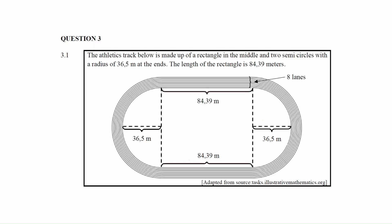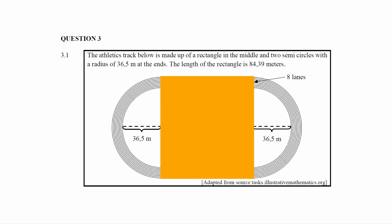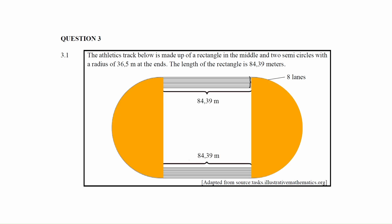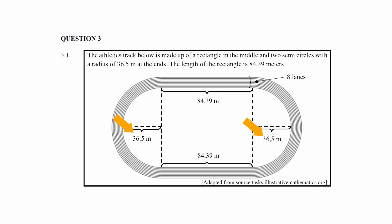You are given a diagram of an athletics track made up of a rectangle in the middle and two semicircles with a radius of 36.5 meters at the ends. The length of the rectangle is 84.39 meters.